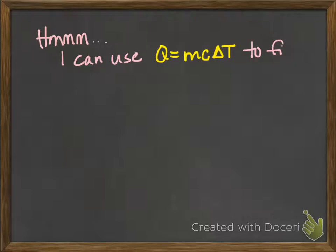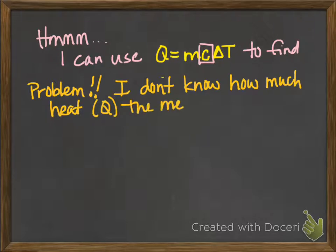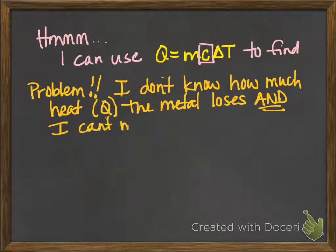So now you should be thinking, I could use the specific heat equation to find C for the metal, but I have a problem. The problem is I don't know how much heat the metal will lose, and I've learned that there's no way to measure heat.